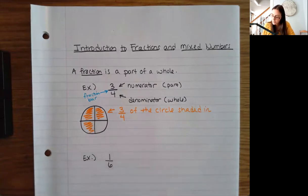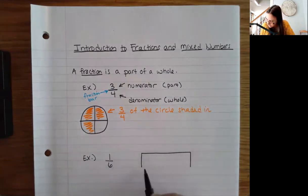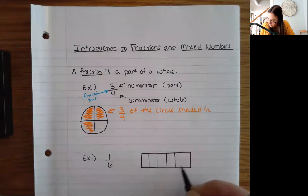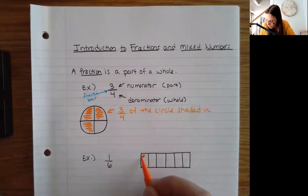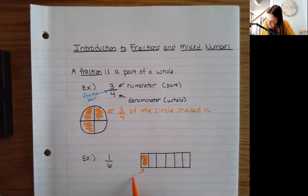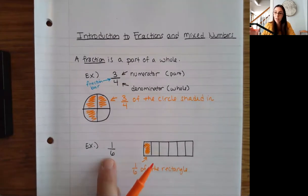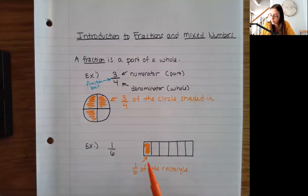Let's say I have one sixth. I'm going to use a rectangle this time. I'm going to break it into six pieces: one, two, three, four, five, six. And if I have one of those pieces, I'm just going to shade in one. So this is one sixth of the rectangle. The denominator gives you the whole — how many parts altogether — and the top part represents whatever part you're focusing on. Here I'm focusing on the shaded part, so I have one sixth of the rectangle shaded.